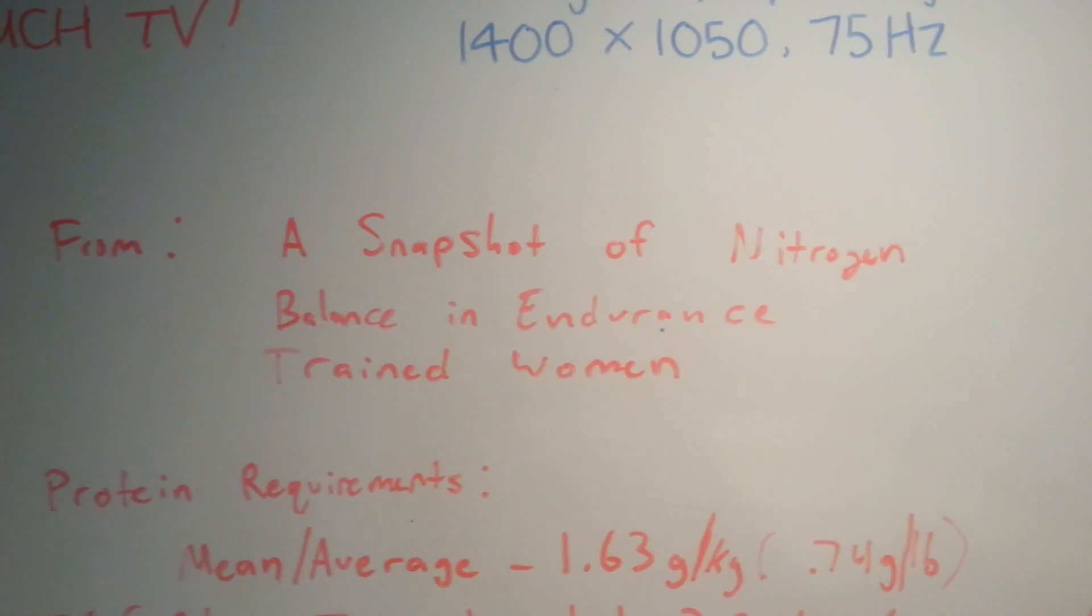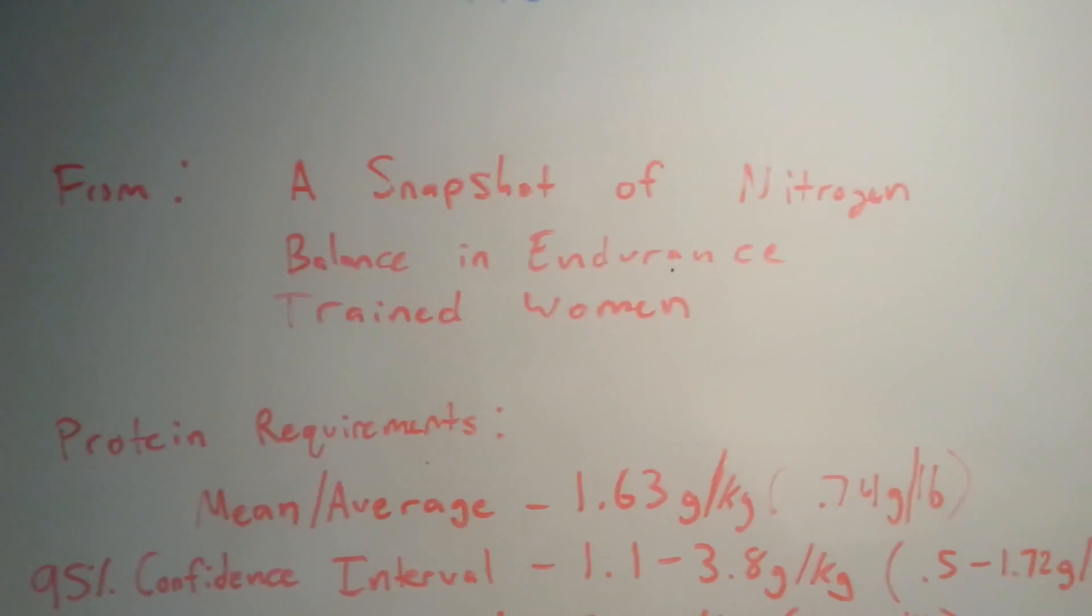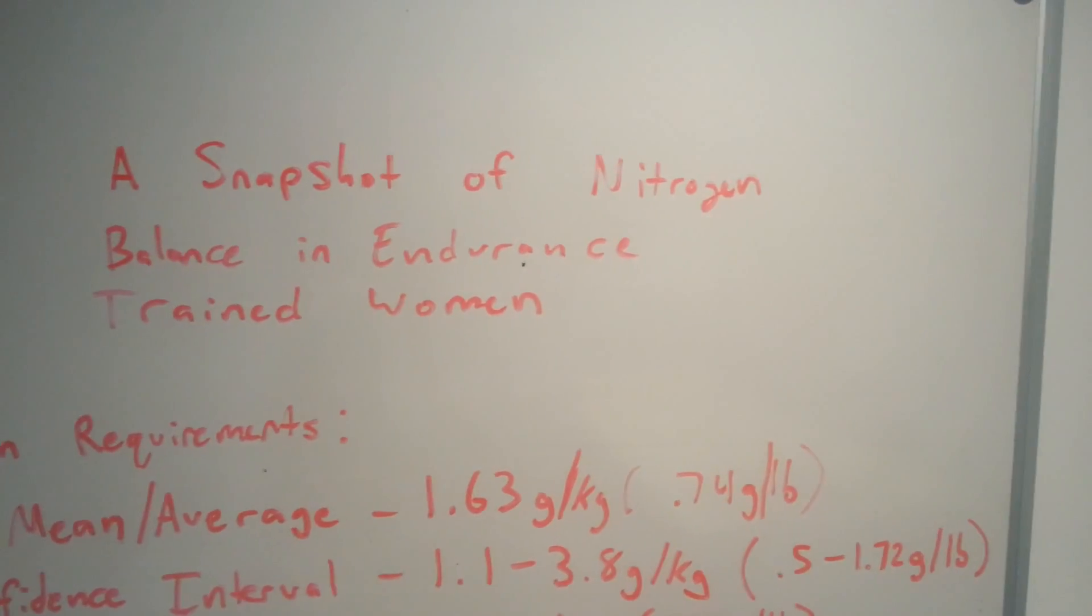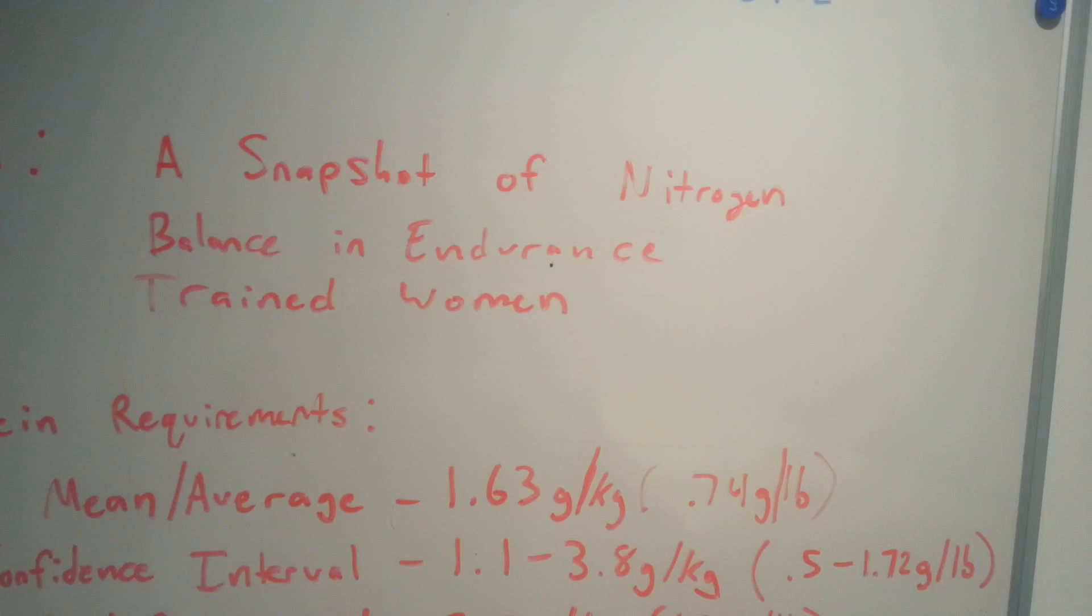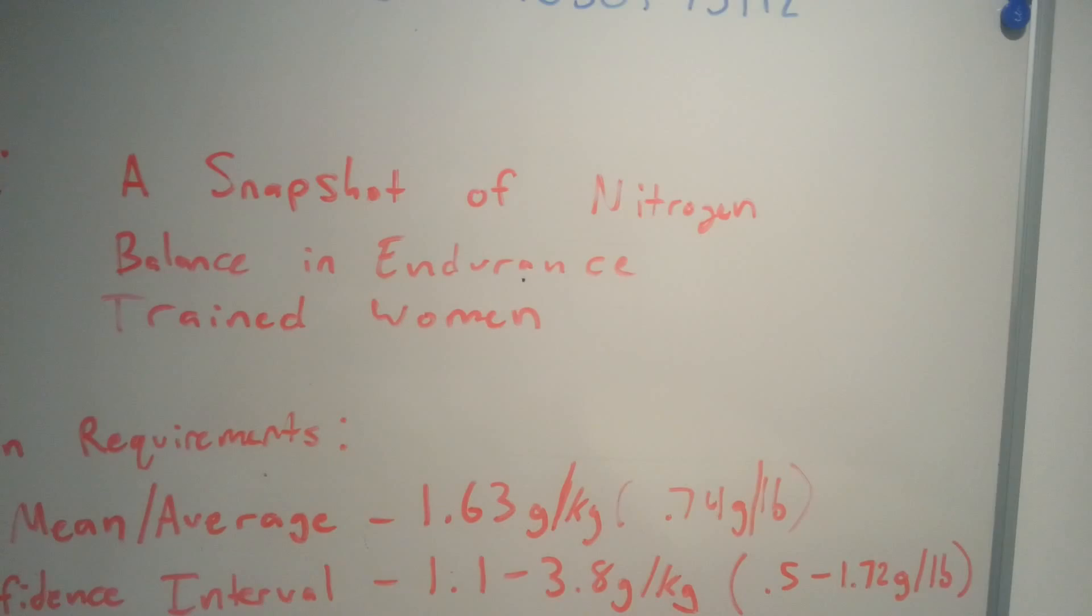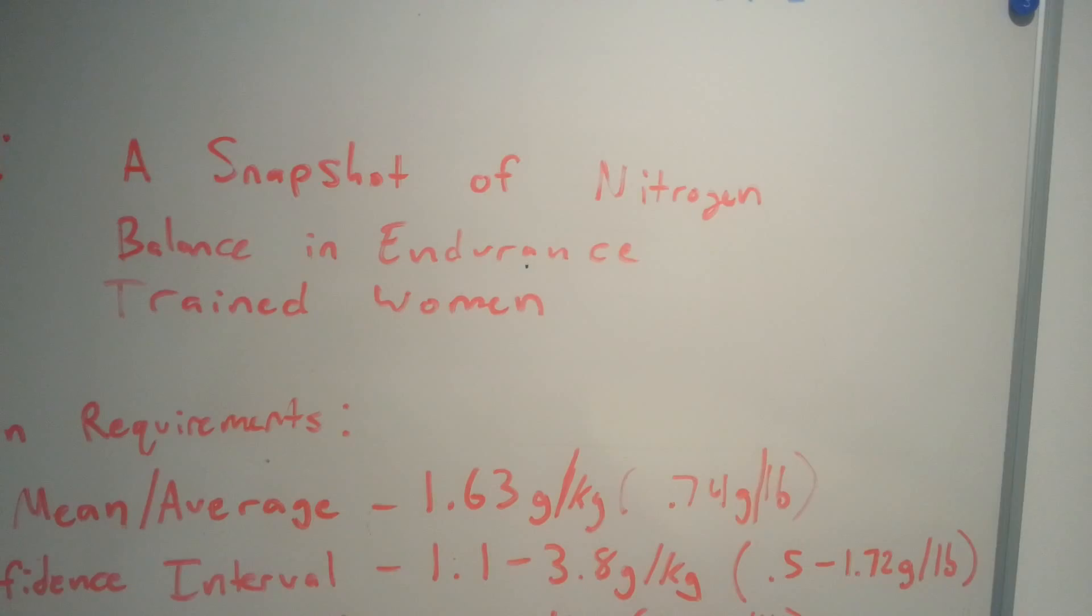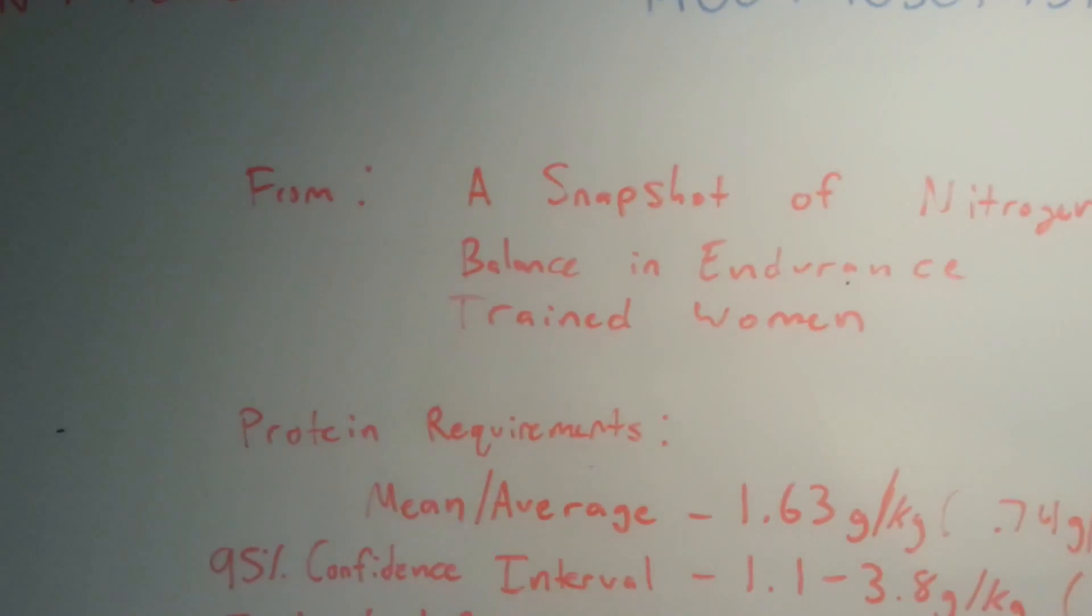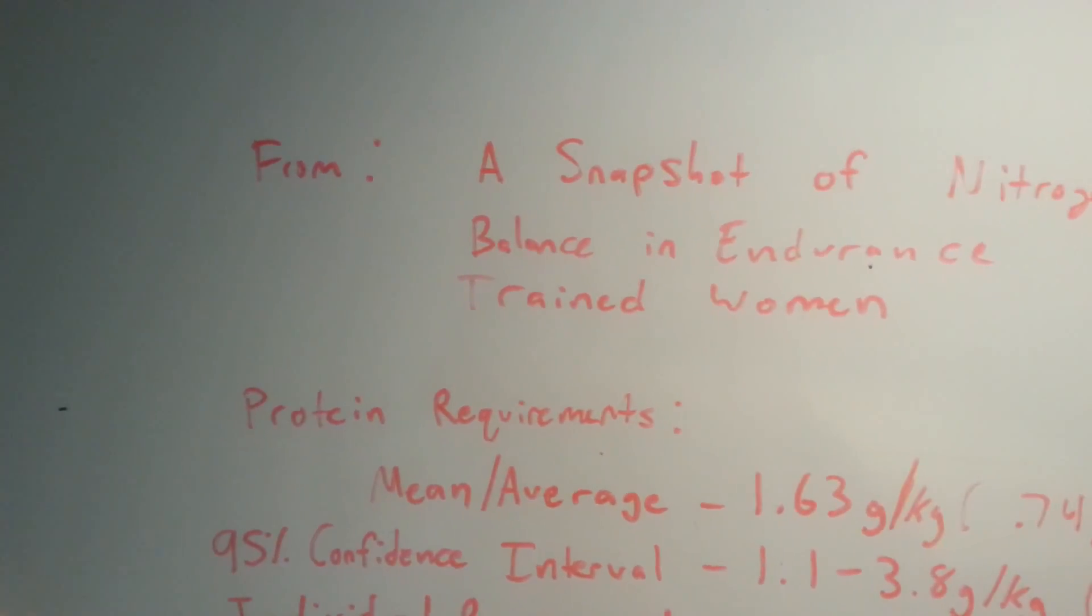Then they go on to report a really good statistic called a confidence interval. However, most people aren't familiar with this if you're not involved in research or statistics. They said the 95% confidence interval shows that it is a 1.1 to 3.8 grams per kilogram requirement for these athletes. I know what you're saying - wait, what does that mean? I thought it was 1.63. That is what most studies report, the mean. However, that average includes a whole bunch of individual data pieces, each one of those individual subjects in the study with different protein requirements.